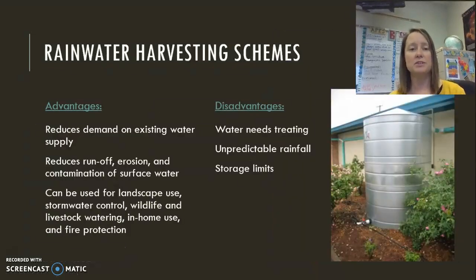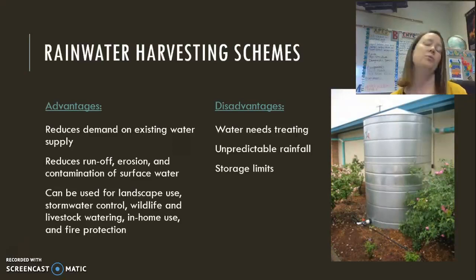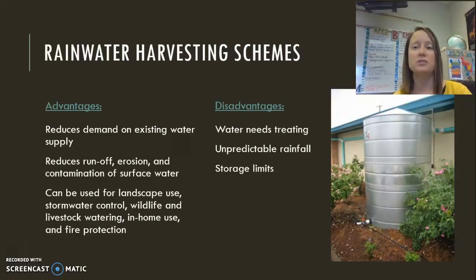Other things we can do include collecting rainwater, which can help reduce demand on existing water supplies and also helps reduce runoff and erosion. It can be used for watering landscapes, controlling stormwater, watering livestock, and fire protection, though it needs some sort of treatment method if used in the home. Disadvantages include the need for treatment for household use, the unpredictability of rainfall, and limits on how much can be stored.